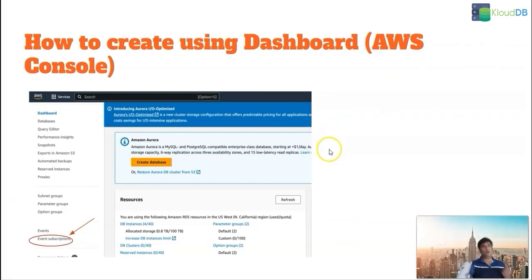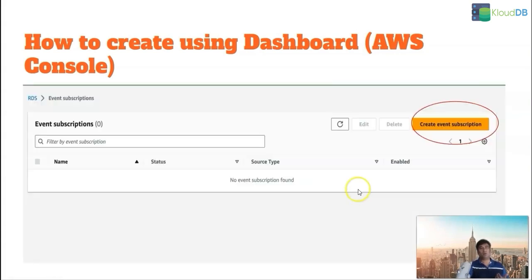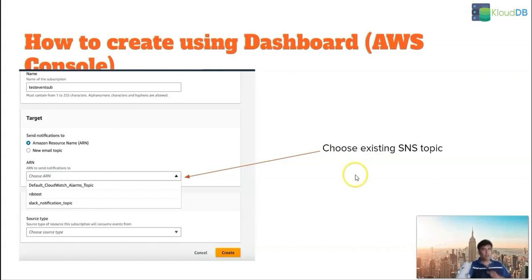So how do we create an event subscription using a dashboard? Once you go to the RDS section, there is something called event subscriptions on the left — you need to click on that. Once you click on that, you'll be navigated to a page where you can click on 'Create event subscription.' You can then choose an ARN for your SNS topic if you already have one, or you can create a new email topic.